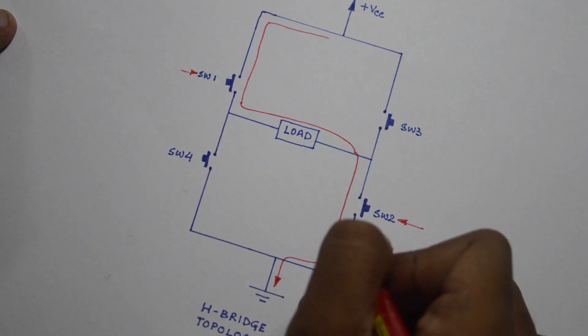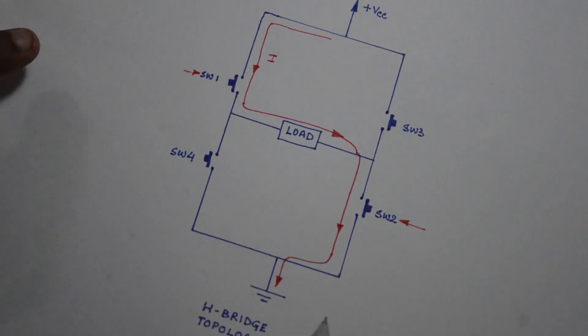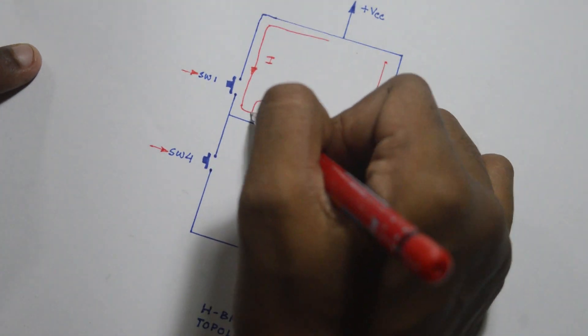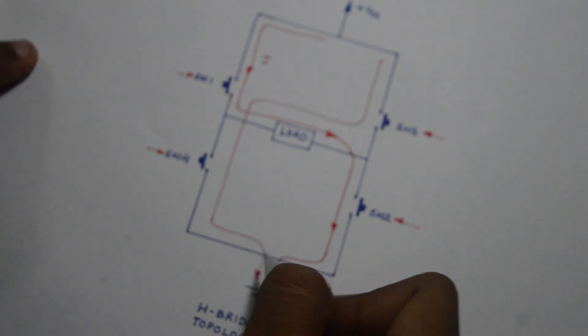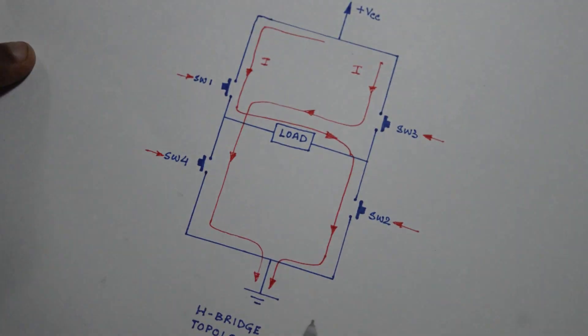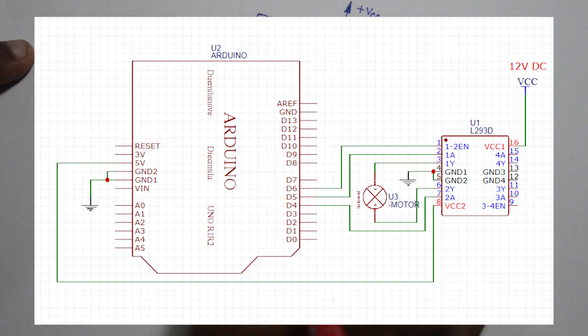If the load is a DC motor, pressing switch 1 and 2 at the same time will turn the DC motor clockwise, and pressing switch 3 and 4 at the same time will turn the DC motor counterclockwise. Practically, the switches are replaced by power transistors or MOSFETs. So this will be our final circuit to serve this purpose.